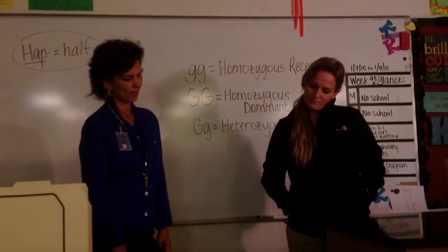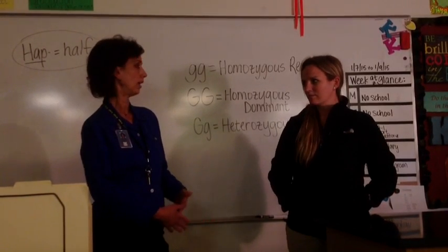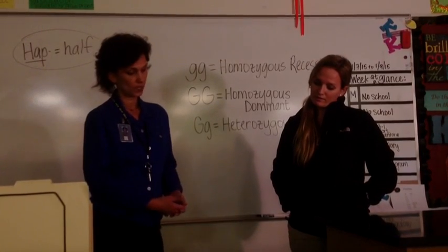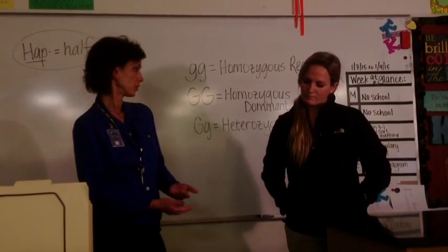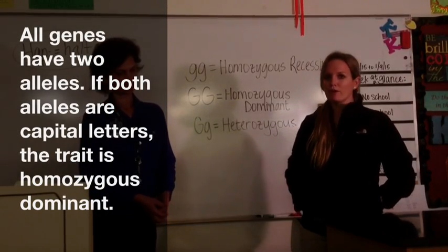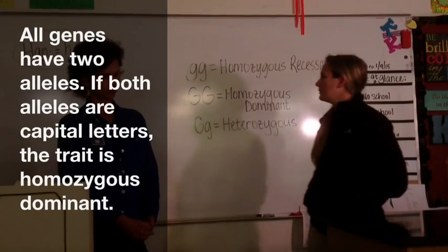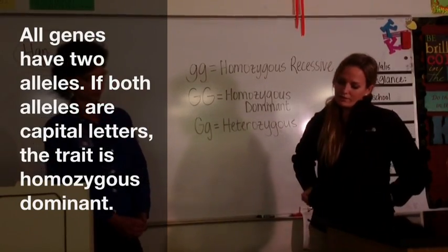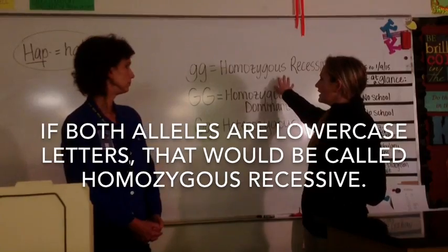So is that how you have blonde hair and your dad has brown hair — the dominant alleles are always expressed or visible? Exactly. All genes have two alleles. If both alleles are dominant, the trait is called homozygous dominant. If both alleles are recessive, the trait would be called homozygous recessive.